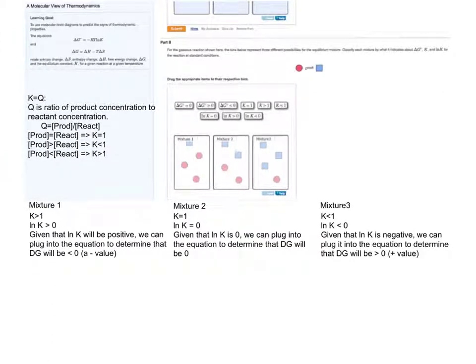We can use the information that we have gathered thus far to determine delta G0. The equation delta G0 here relates delta G0 and the natural log of K. Given that the natural log of K for mixture 1 will be positive, we can plug it into the equation to determine that delta G0 will be less than 0, or a negative value.